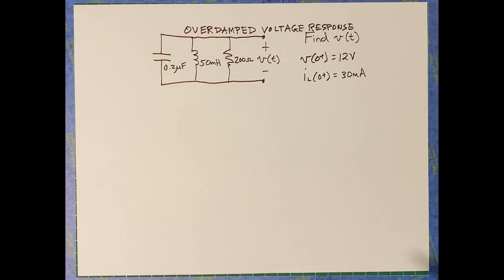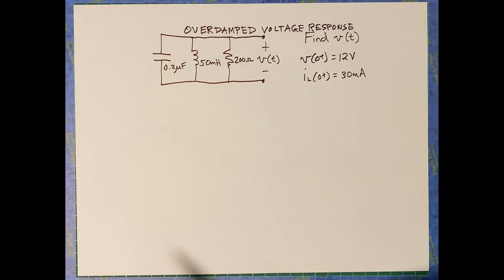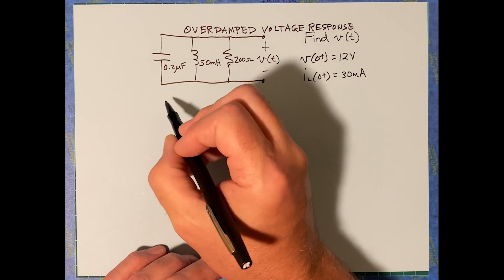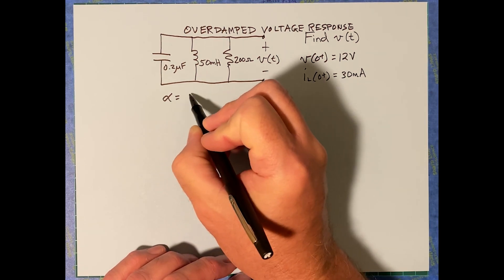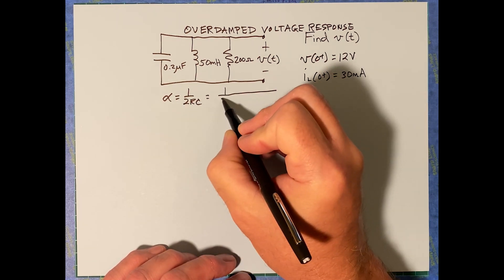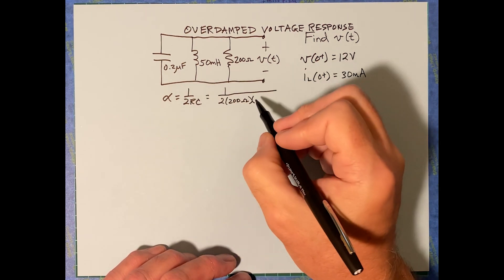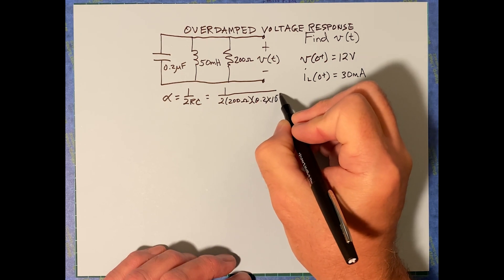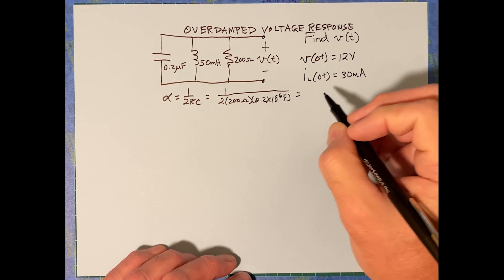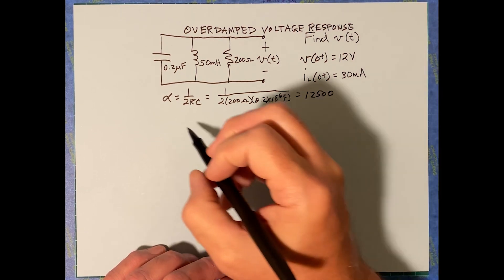If you were approaching this problem without knowing it's overdamped, you need to test it. Alpha is one over two RC, which is one over two times 200 ohms times 0.2 times 10 to the negative six farads. If you do that calculation, you end up with 12,500.